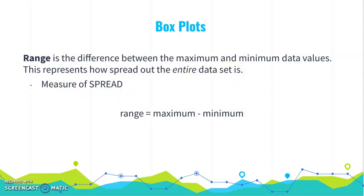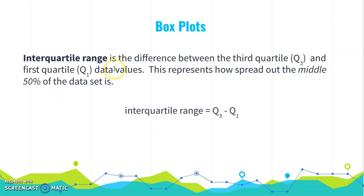Now a new concept is interquartile range, and it tells you the difference between the third quartile and the first quartile. So it tells you how spread out the middle 50% of the data is. Again, this is still a measure of spread, but it just tells you how spread out the data within the Q1 to Q3 is. So it ignores the lower and the upper 25%.